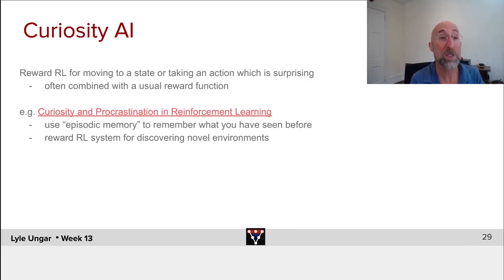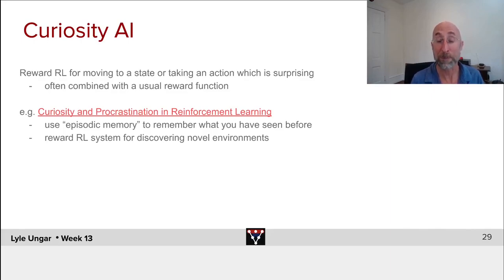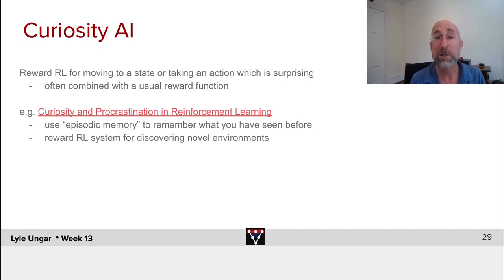A number of researchers try this, often combining it with something like episodic memory — remember not just the rules of what happens if you take an action and how good or bad it is, but also remember: what have I seen? Is this familiar? Is this not familiar? Humans and rats are remarkably good at recognizing: yes, I've seen this before; no, I've never seen this. If you augment your learning with that sort of episodic memory — I remember having seen this yesterday, I had this for lunch yesterday, I've never eaten that, I'm curious, let me try it — then you can actually reward the RL system for discovering novel environments and novel actions, as well as for trying to succeed at its end task.